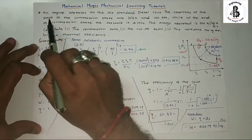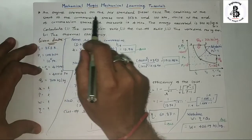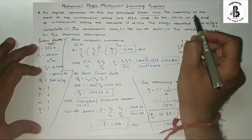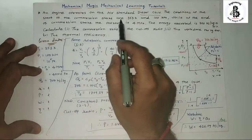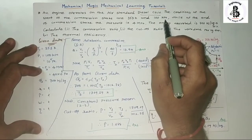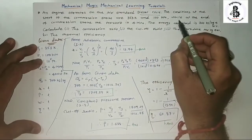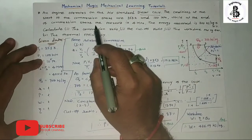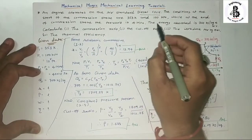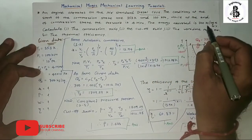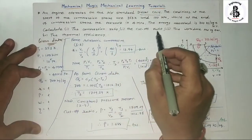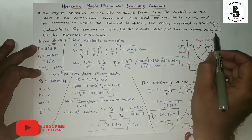The problem data is given: an engine operates on an air standard Diesel cycle. The conditions at the start of the compression stroke are T1 = 353 Kelvin and P1 = 100 kPa. At the end of the compression stroke, the pressure is 4 MPa. The energy absorbed is 700 kJ/kg of air. We need to calculate the compression ratio, cutoff ratio, work done per kg of air, and the thermal efficiency.